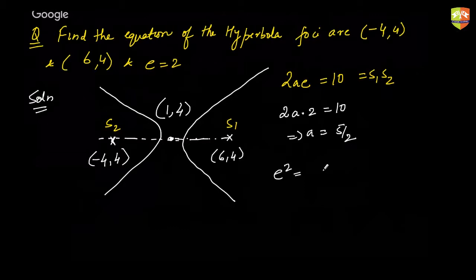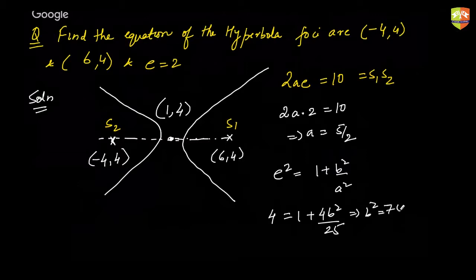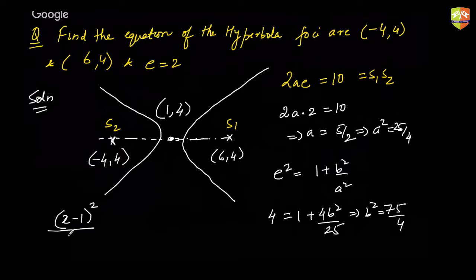The eccentricity formula is e = √(1 + B²/A²). So e² = 4, A² = 25/4, and B² is unknown. This gives B² = 75/4. Now we can write the equation of the hyperbola: (x−1)²/(25/4) − (y−4)²/(75/4) = 1.